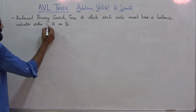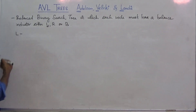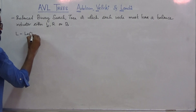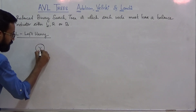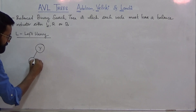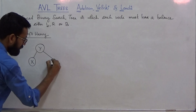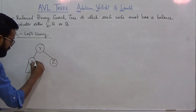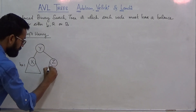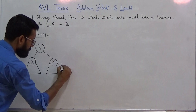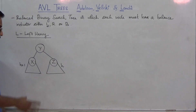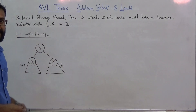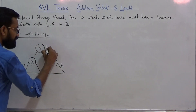Let us define balance indicator L. L stands for left-heavy. Consider a subtree rooted at Y, having a left subtree rooted at X and a right subtree rooted at Z. X is of height H+1 and Z is of height H. Since the left subtree is of height exactly 1 greater than the right subtree, this node is said to be left-heavy.